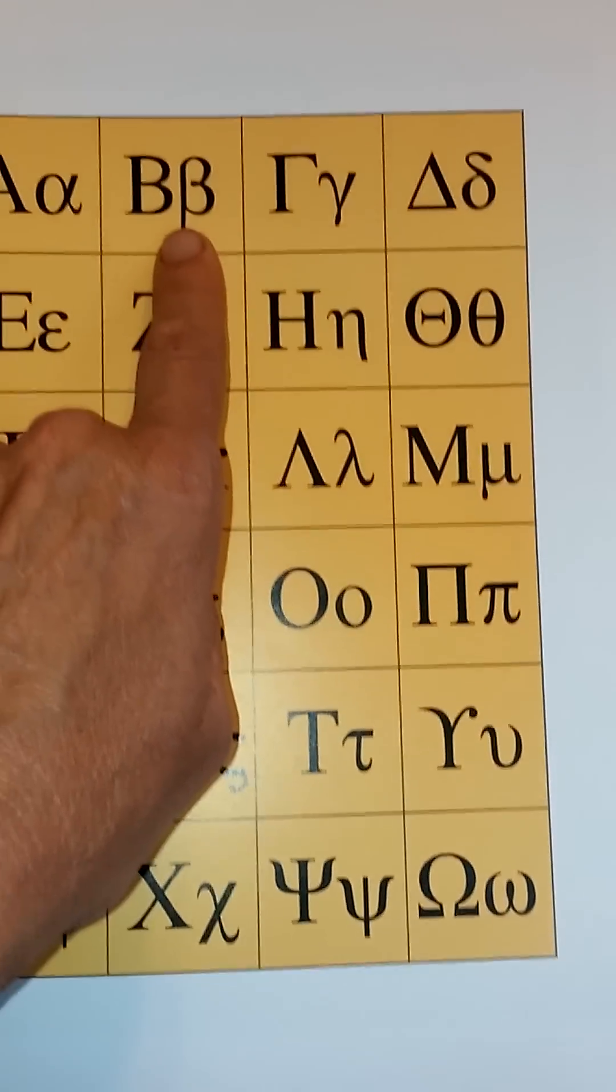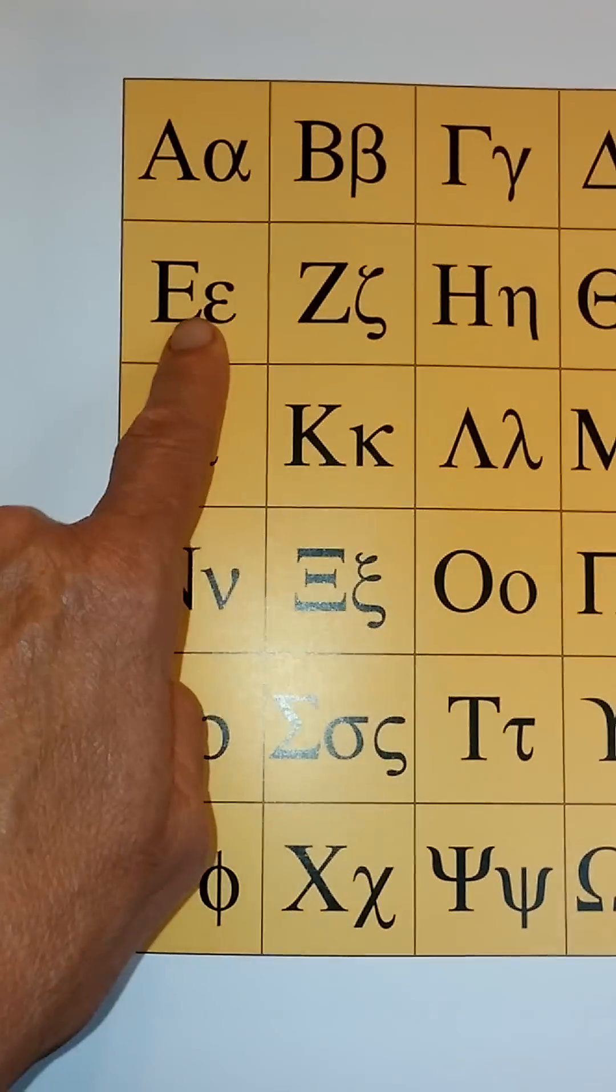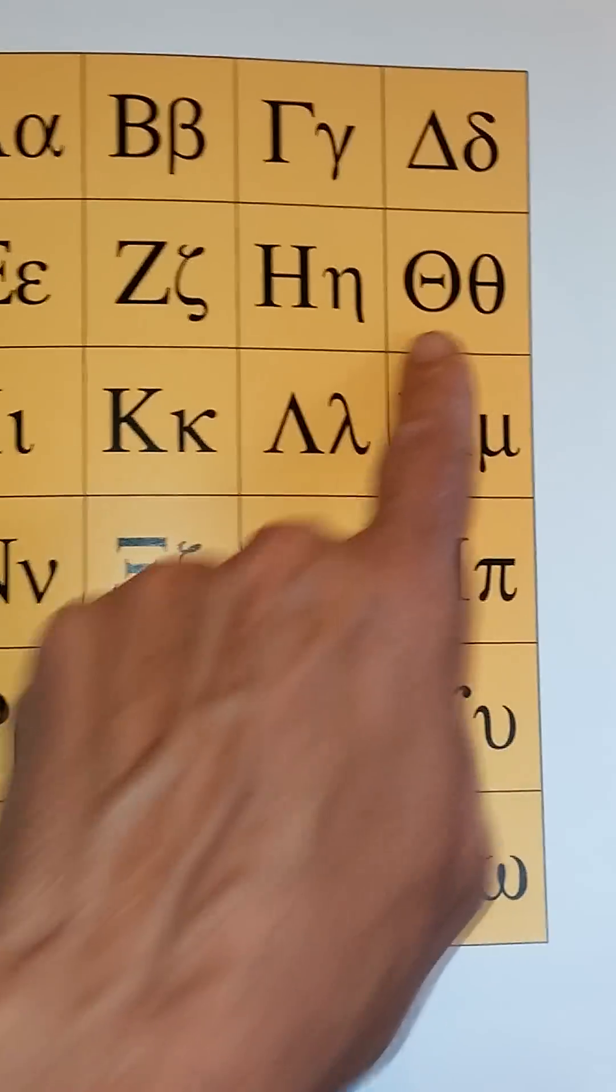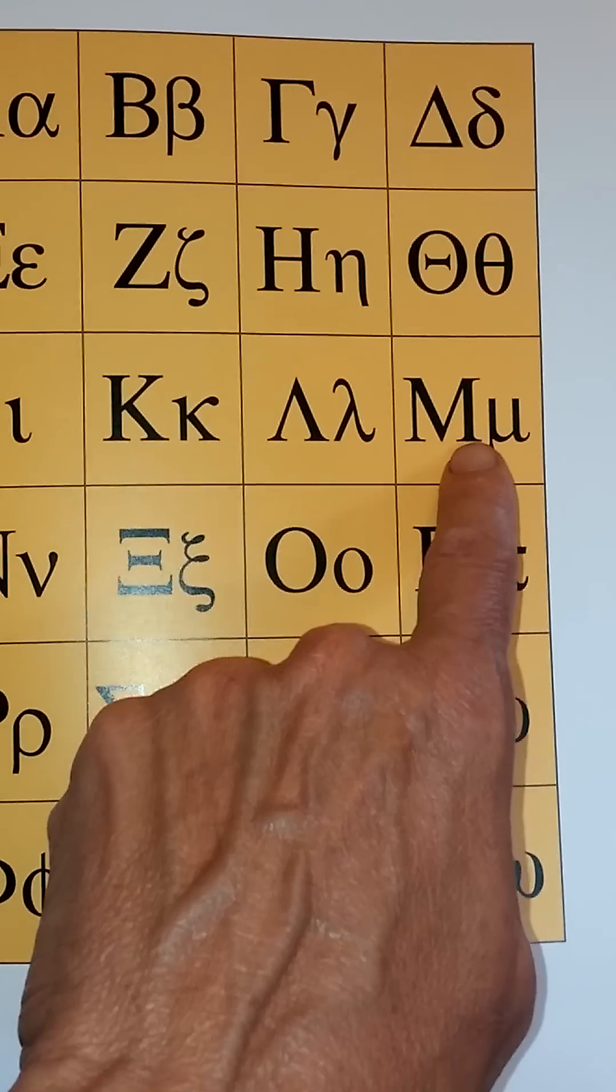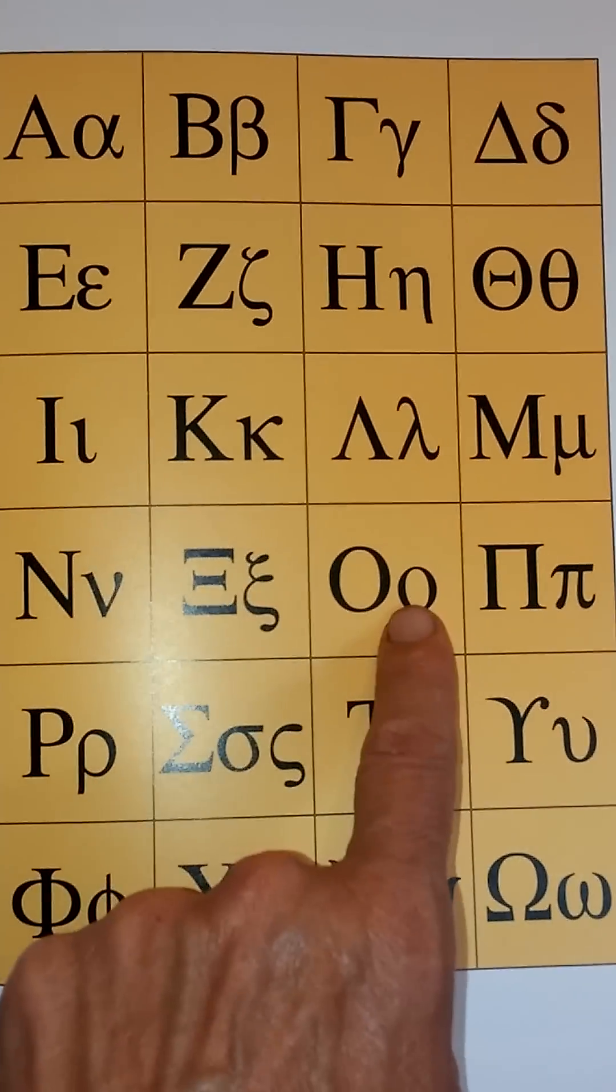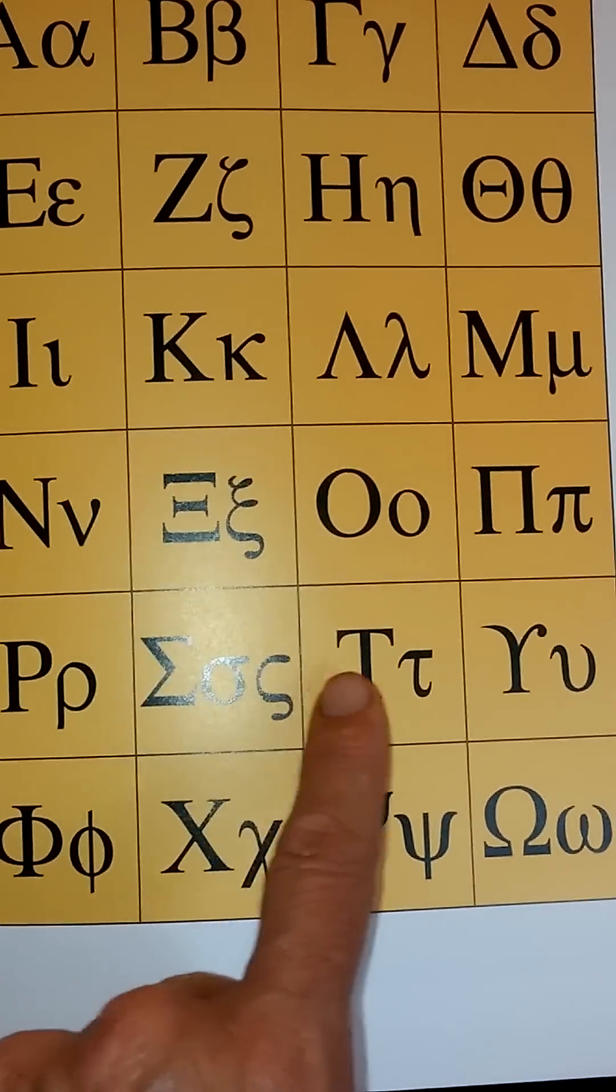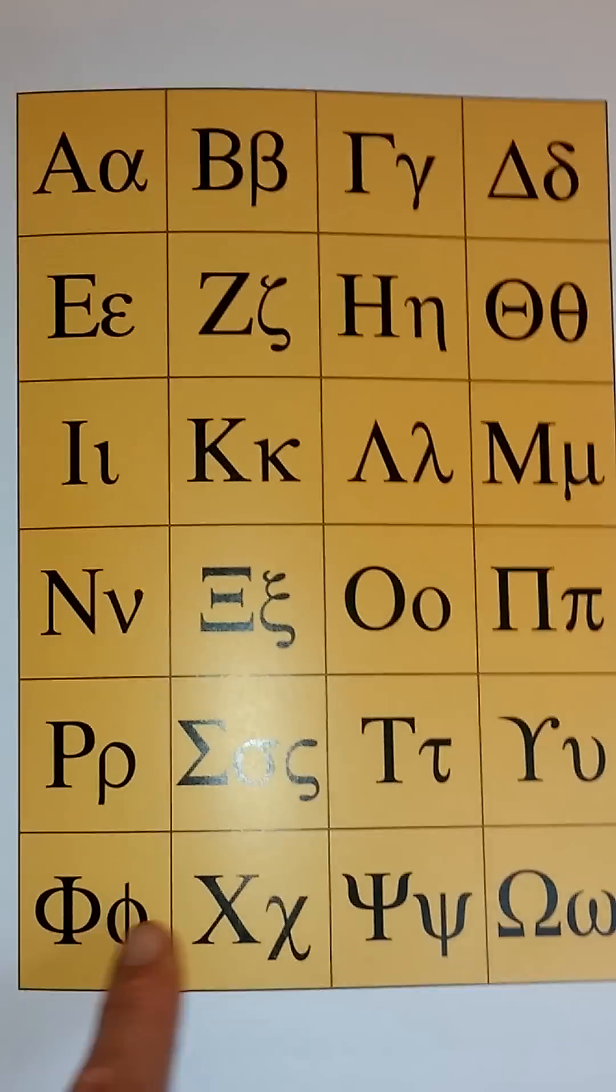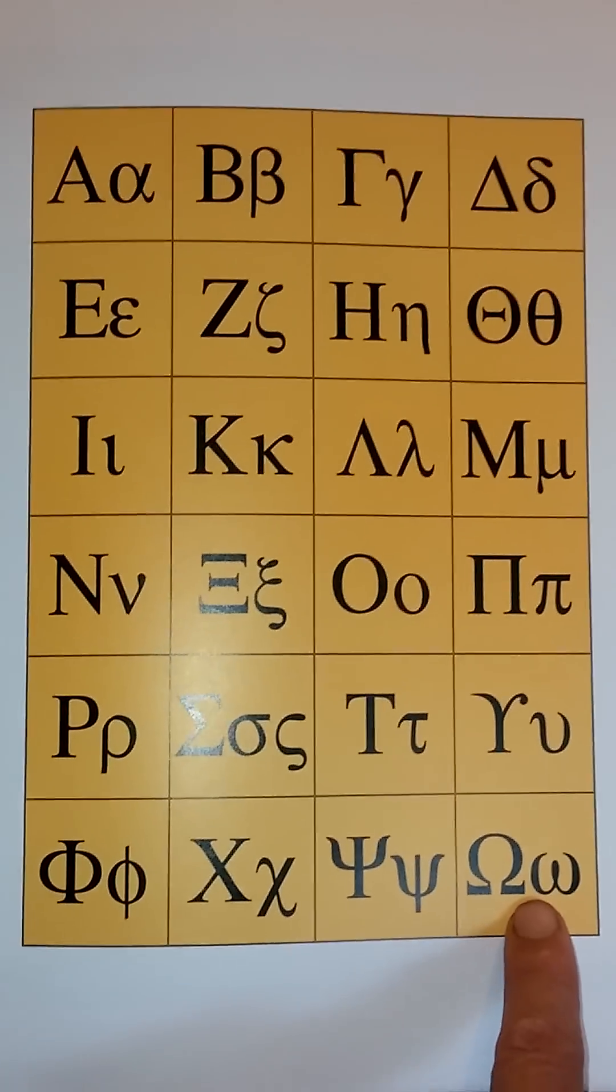Alpha, beta, gamma, delta, epsilon, zeta, eta, theta, iota, kappa, lambda, mu, nu, xi, omicron, pi, and rho, sigma, tau, and upsilon, phi, chi, psi, omega.